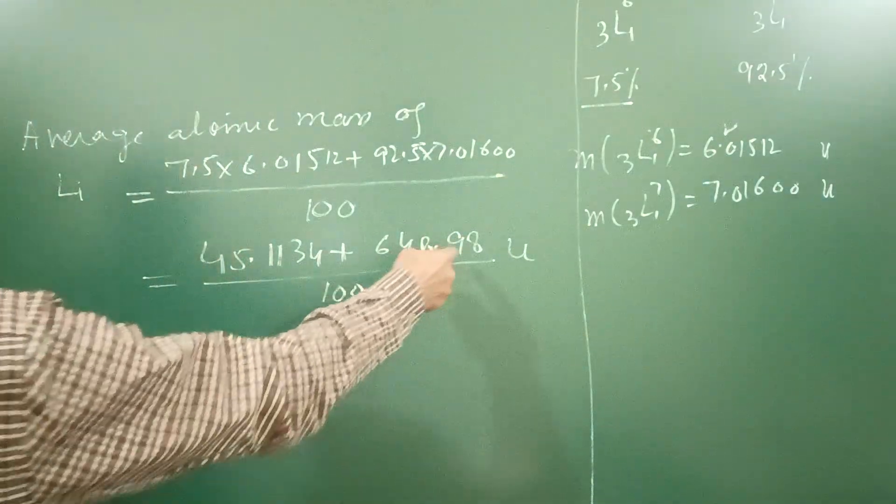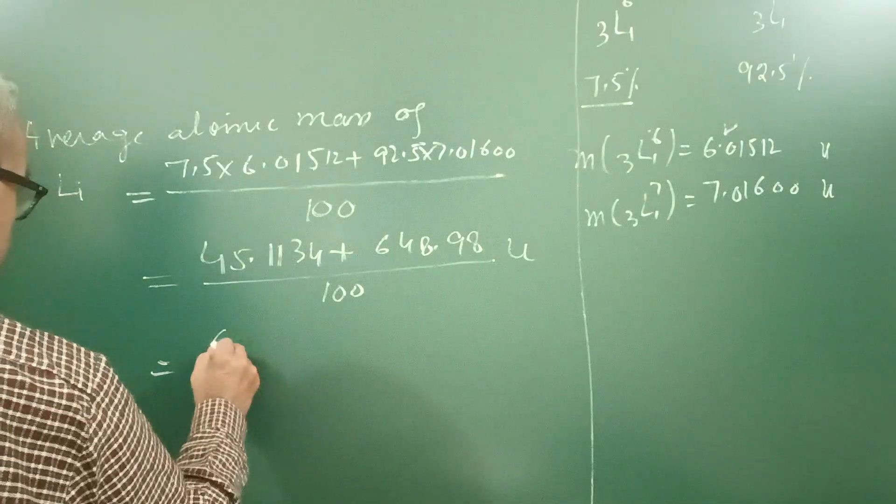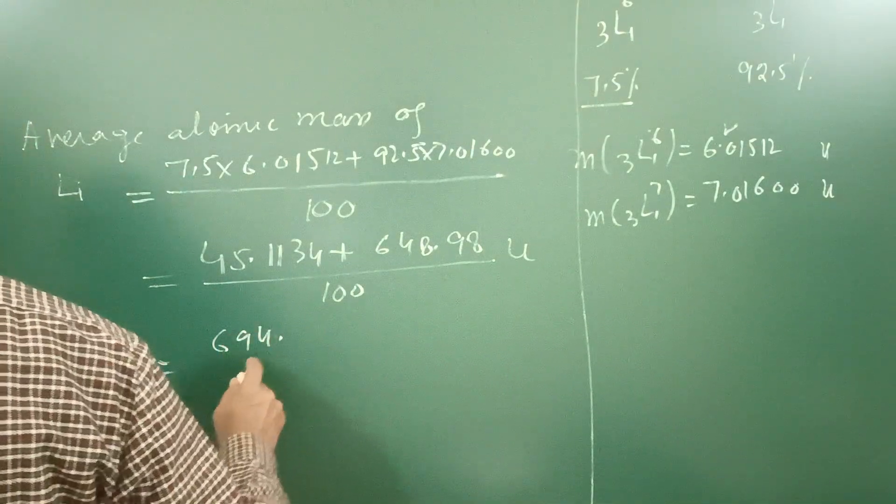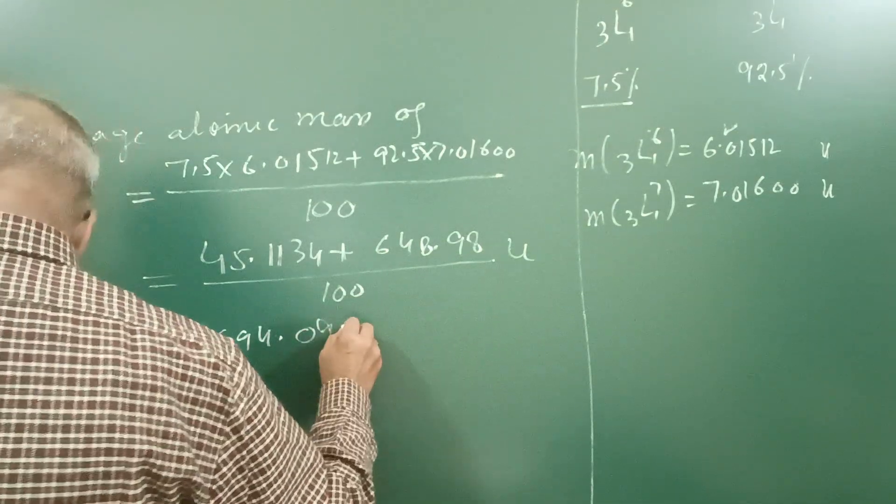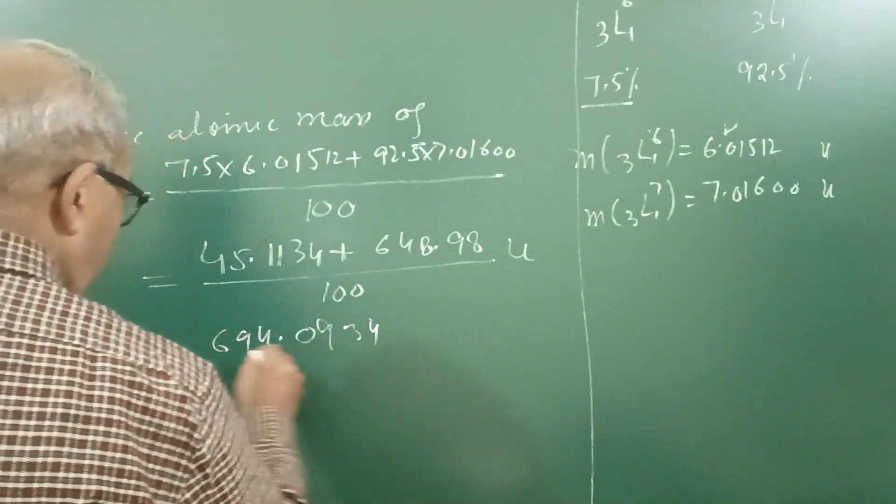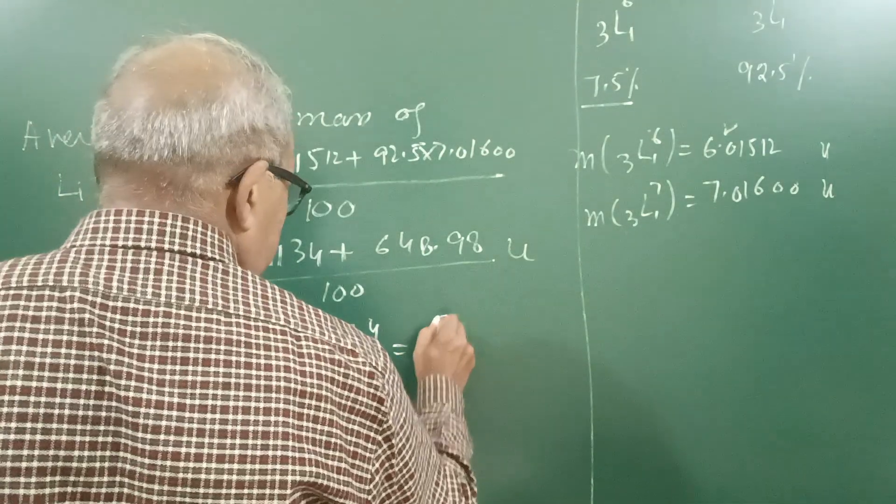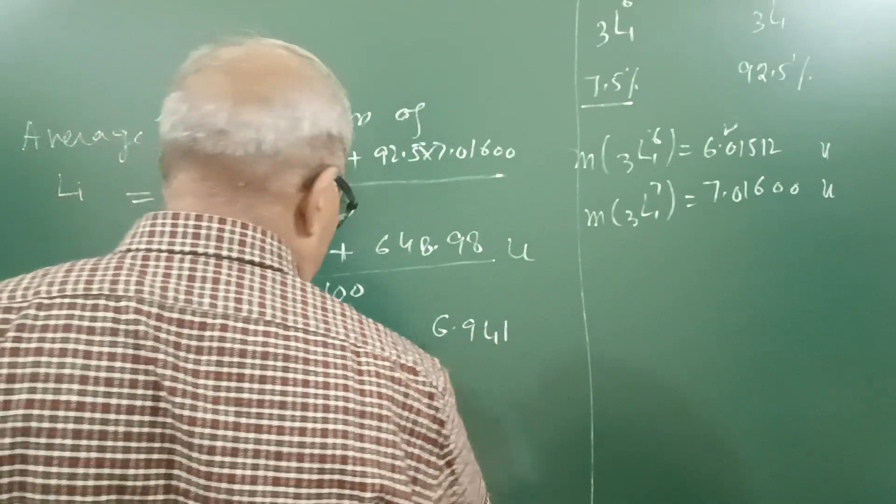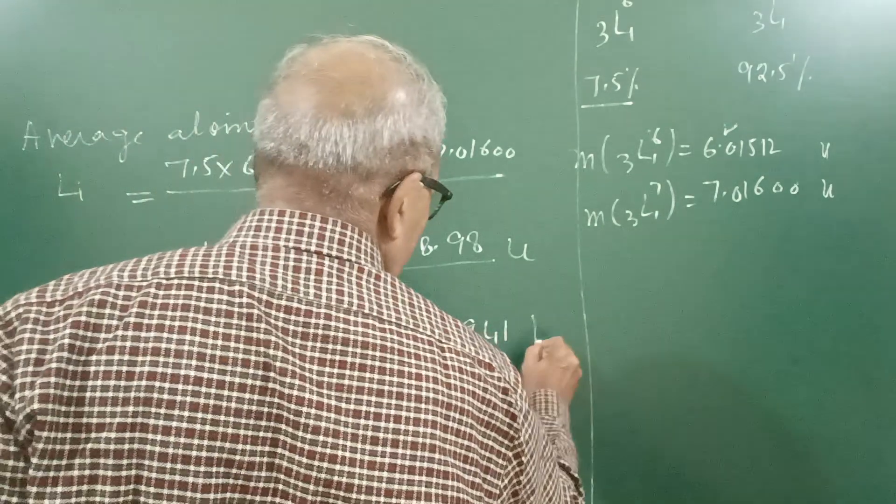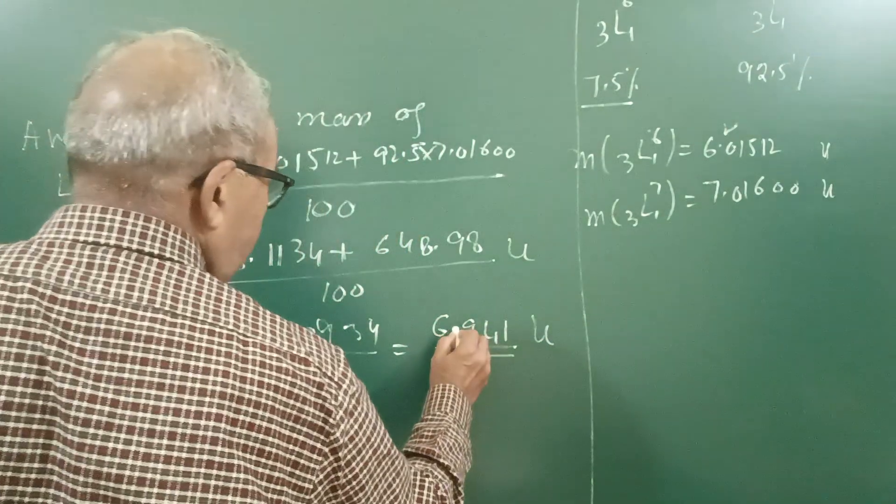If we add these two we get total mass 694.0934 upon 100. That will come out to be 6.94U approximately. So this is the average atomic mass of lithium.